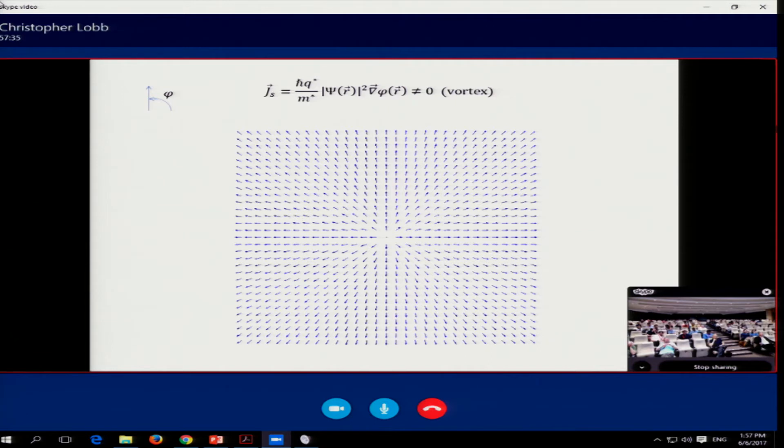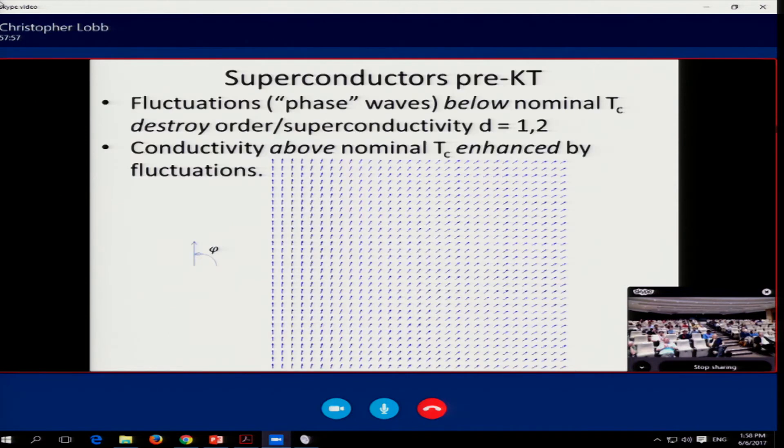So I've shown you a ground state, a couple of different configurations that have currents flowing. And all these things were pretty well understood prior to KT. A good deal, say, in the first edition of Tinkham's book, was explained in terms of these kind of pictures. Okay, so let's look at what we did understand. Prior to KT, fluctuations, fluctuations that you could call phase waves, or you'd call spin waves in a magnet, below the nominal Tc, they destroy the order or the superconductivity in D equals one and two.